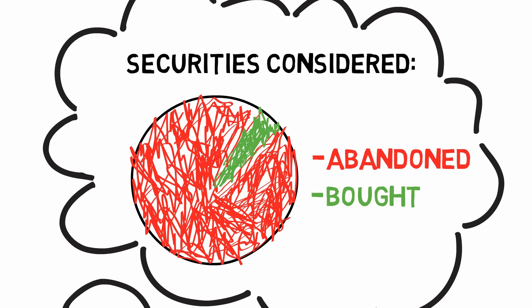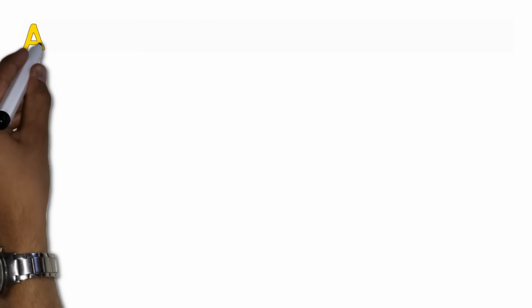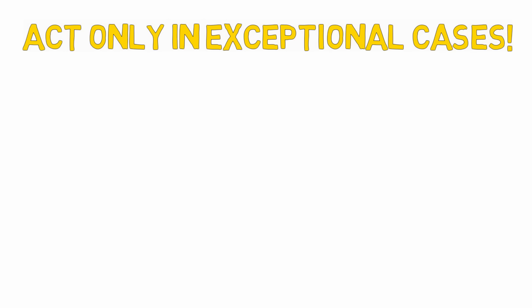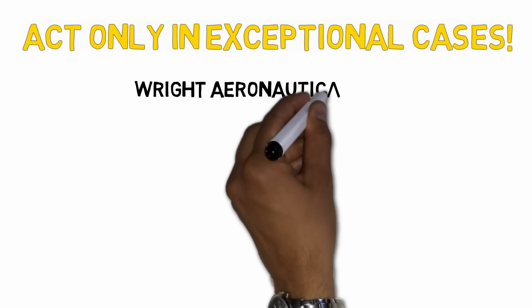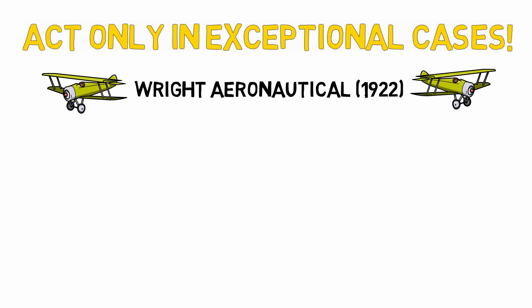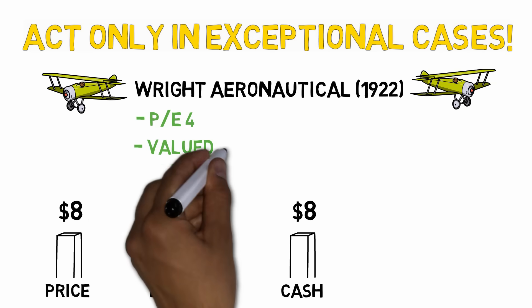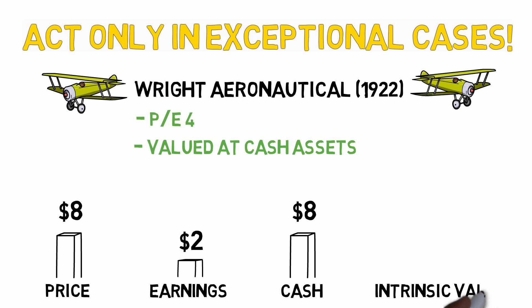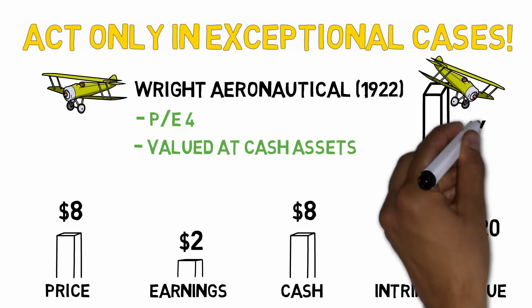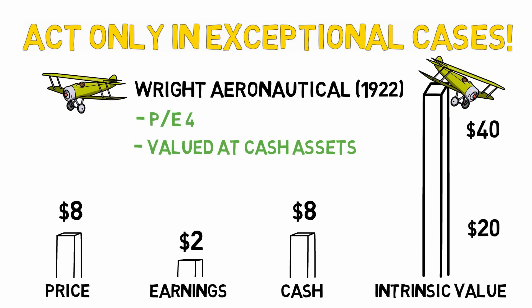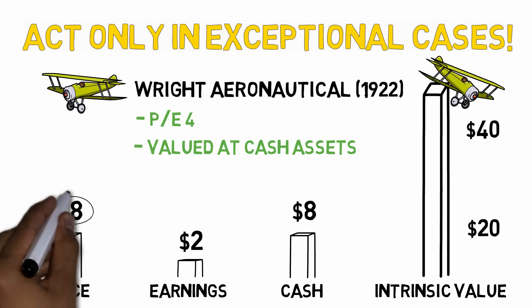Security analysis isn't an exact science. You should only act in exceptional cases. Benjamin Graham gives a great example of this in the common stock of Wright Aeronautical that was priced at $8 per share back in 1922, when it had, for some time, been earning $2 per share, and had more than $8 per share in cash only. It would have been difficult, at this point, to decide whether Wright Aeronautical was worth $20, or perhaps even $40. But luckily, that wasn't necessary to conclude that it was attractive to buy the stock at $8.